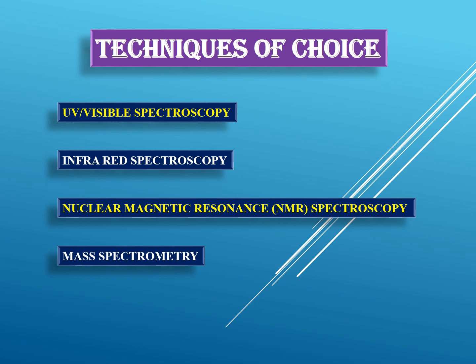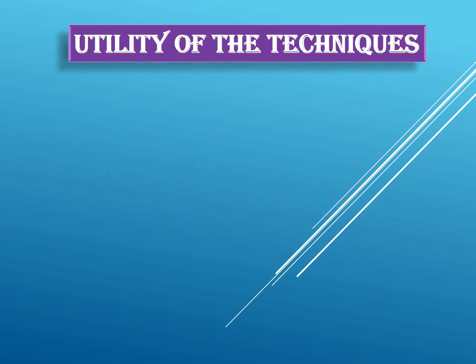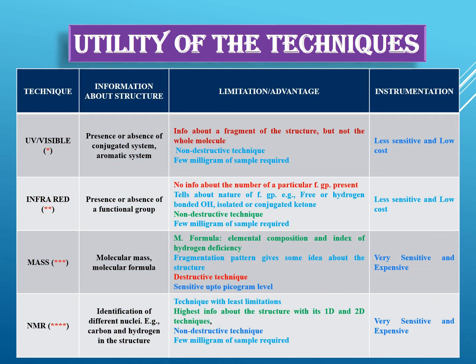These are the four basic techniques required for complete structure elucidation of an unknown organic compound. These are not the only techniques, but they are the basic techniques which will give you maximum information about the structure of the molecule. If you still have some problems, you can go to X-ray crystallography and other techniques for more information, but mostly you can elucidate the structure using these four techniques.